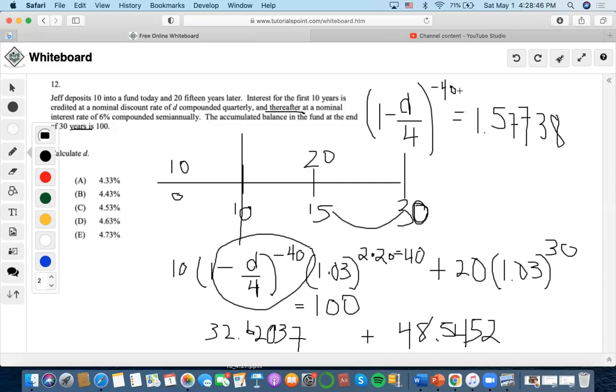We can take this to the other side and make this exponent positive by making a fraction of 1 over the whole thing. We do 1 divided by 1.57738.